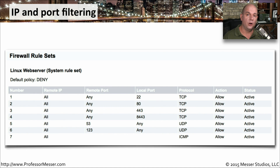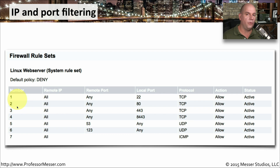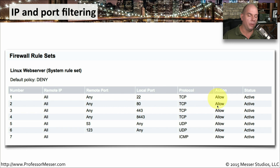Here's a rule set for a firewall that I took from a web service I was using. The ISP had already configured the firewall with default rules for the web server. Evaluating from top to bottom: rule one allows any remote IP from any remote port going to local port 22 — set up for an SSH connection. The next three are for web services: rule two allows any remote IP on TCP port 80 for standard web services; rule three covers port 443 for encrypted web services.